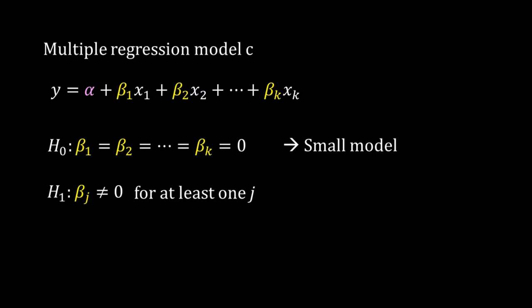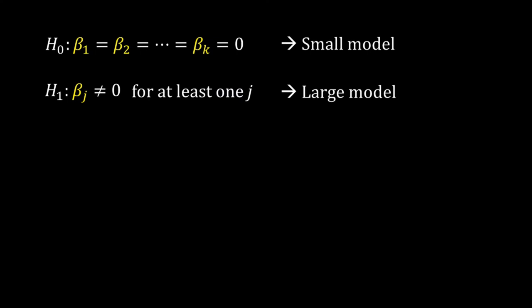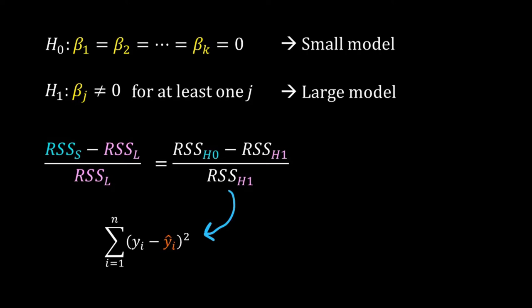The null hypothesis is the small model as it does not have any predictors — in fact it is the smallest model — and the alternate model is the large model. To compare the small and the large model, i.e., the null model and the alternate model, I will use the RSS of these two models. The RSS of H₁, the alternate model, is the RSS discussed earlier for regression models: the summation of the squares of the deviations of ŷᵢ from yᵢ. But then, what is the RSS of the null model?